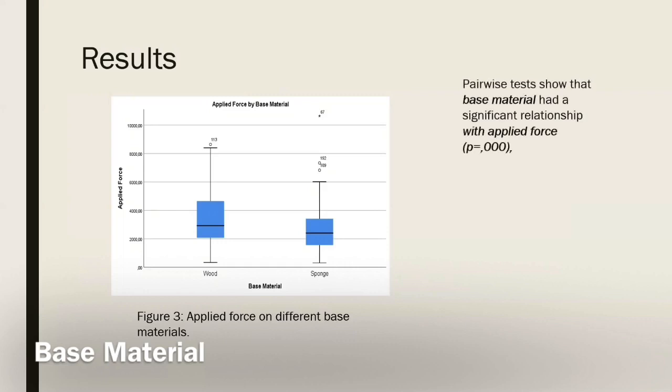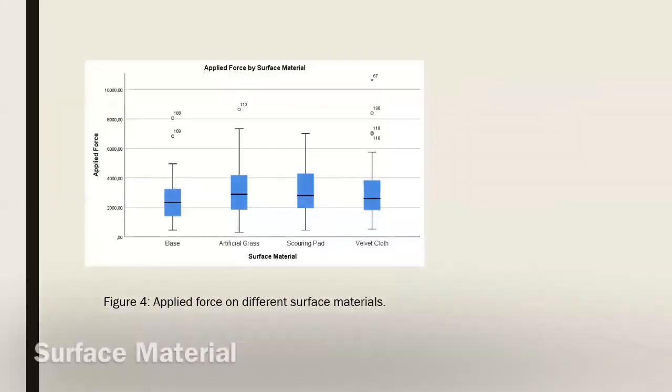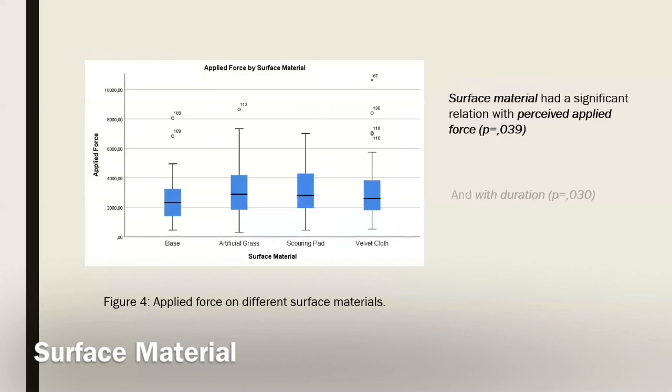Pairwise tests show that applied force, perceived applied force, duration, and perceived hardness is significantly different across different base materials. However, only perceived applied force and duration were significantly different across different surface materials.